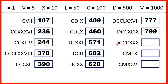Now we have D, C, C, C, C, so that's 500 plus three more 100s, which gives us 800. And we have three Xs, so that's three 10s, which is 30. So altogether we have 830.